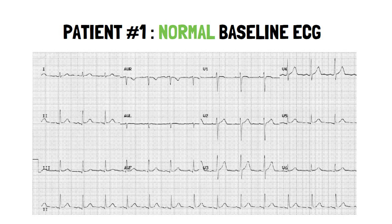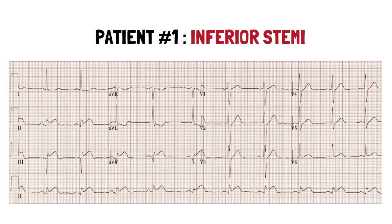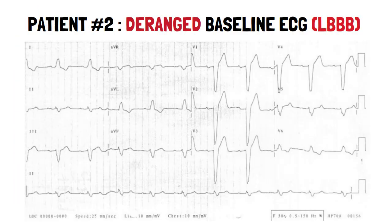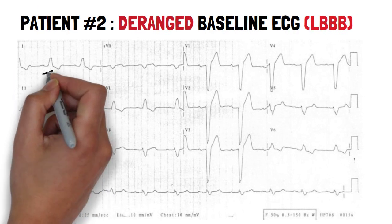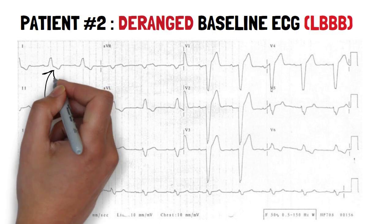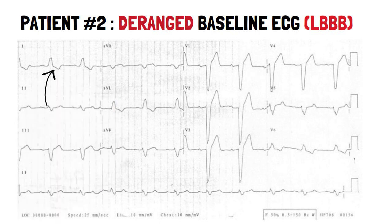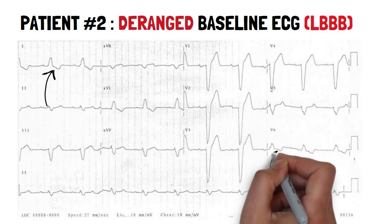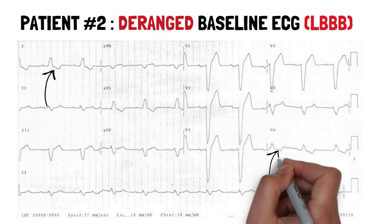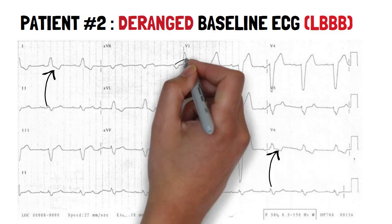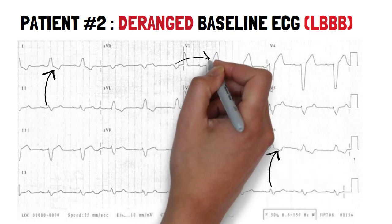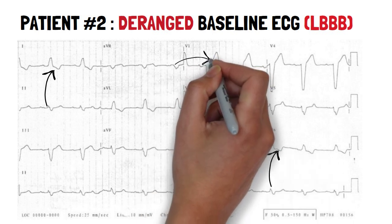If the baseline ECG is normal, ST elevation and ST depression are very easy to recognize. But if the baseline ECG has deranged STT waves, as is seen in left bundle branch block or pacemaker-induced rhythms, recognition of superimposed STT wave changes can be challenging — but it's not impossible.